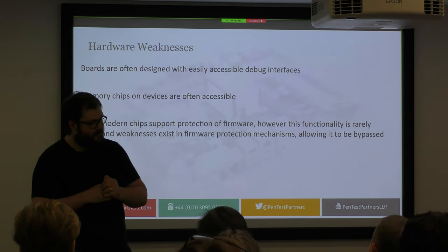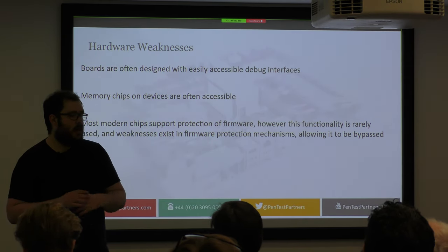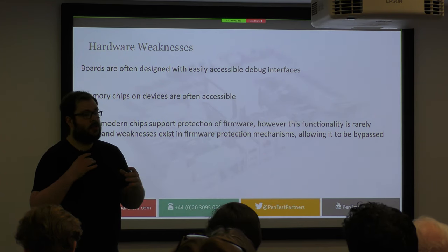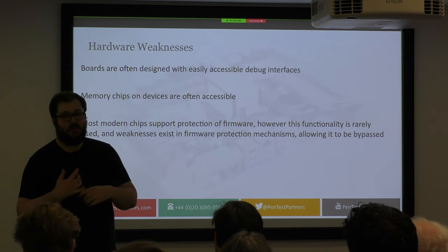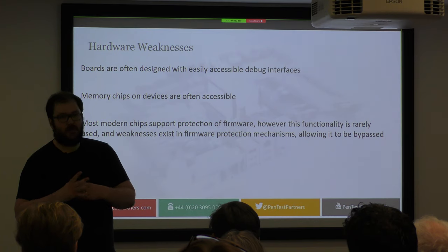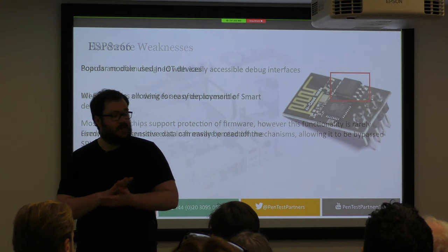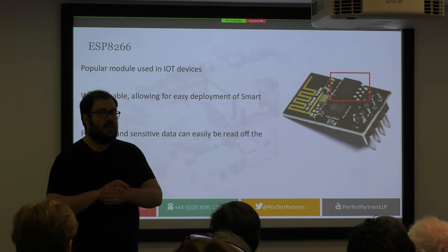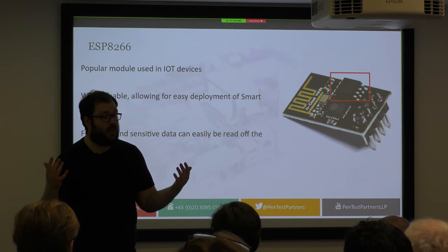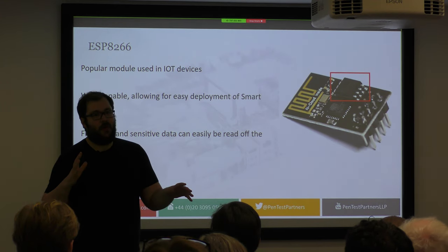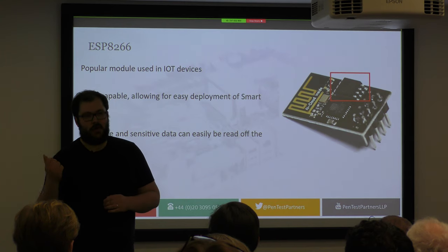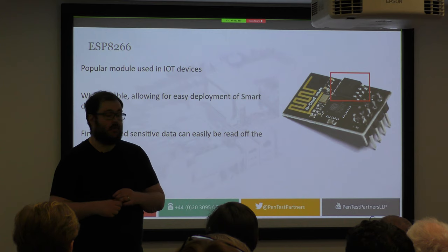Now let's talk about hardware weaknesses — weaknesses in the actual physical chips of a device. Everyone expects hardware to do exactly what it's told: you write firmware to it and it runs it. However, there are always issues. Memory chips can have firmware read off them or be modified. Most modern chips support firmware protection but don't do it very well. The first example is the ESP8266 — used in so many devices. For years this was deployed to add Wi-Fi to kettles, toasters, fridges. It's Wi-Fi capable and allows other chips to communicate via SPI or UART. However, firmware and sensitive data can easily be read off it because it has a SPI flash chip on the board — with a pair of crocodile clips and a Raspberry Pi, you can get all the firmware off that device very quickly.